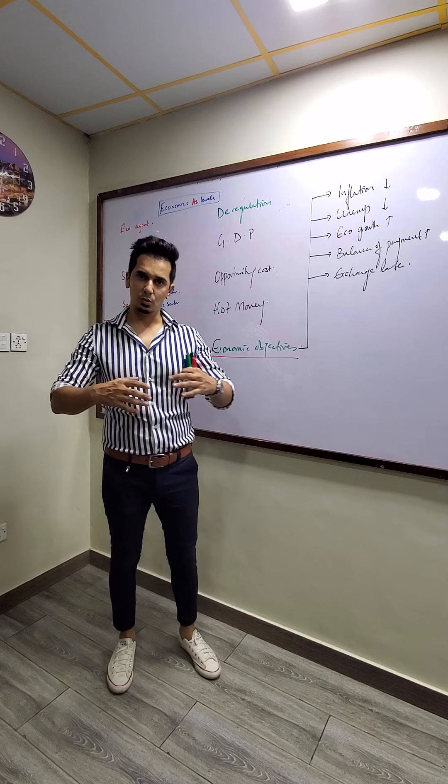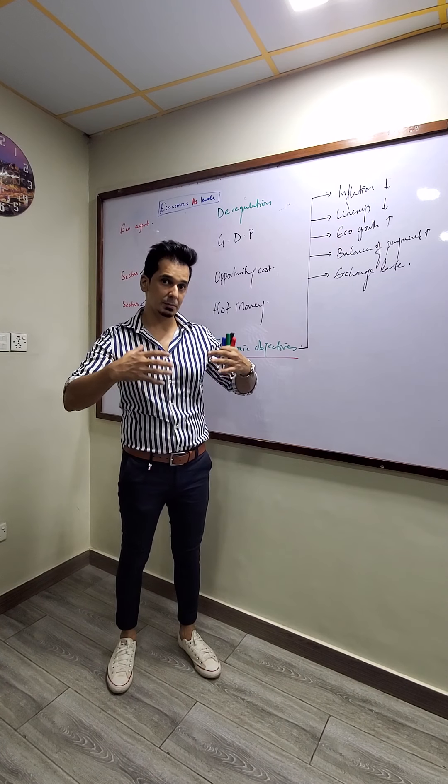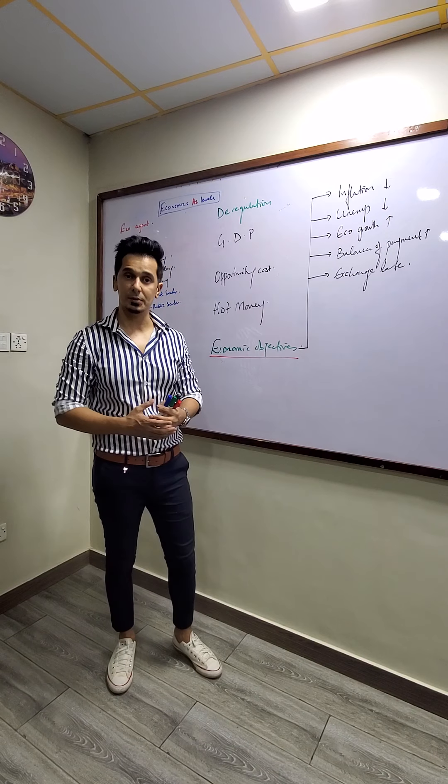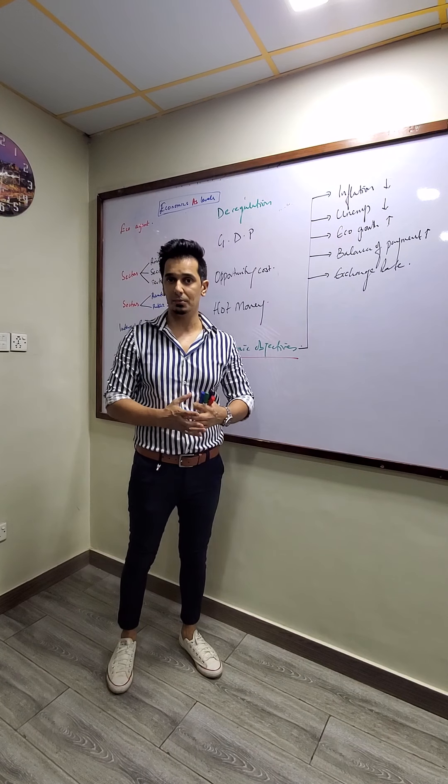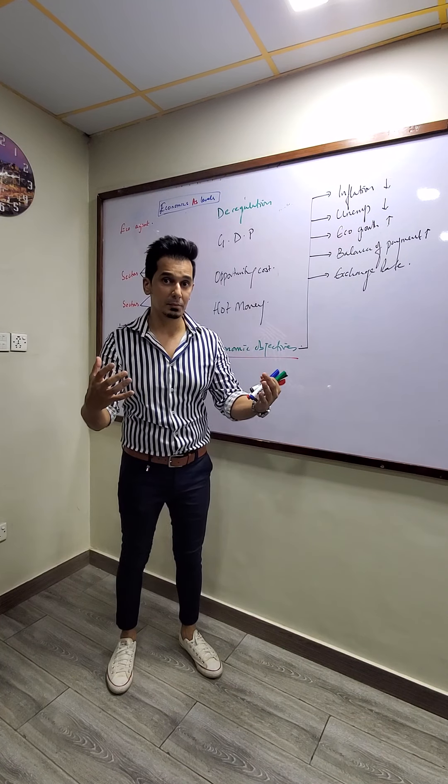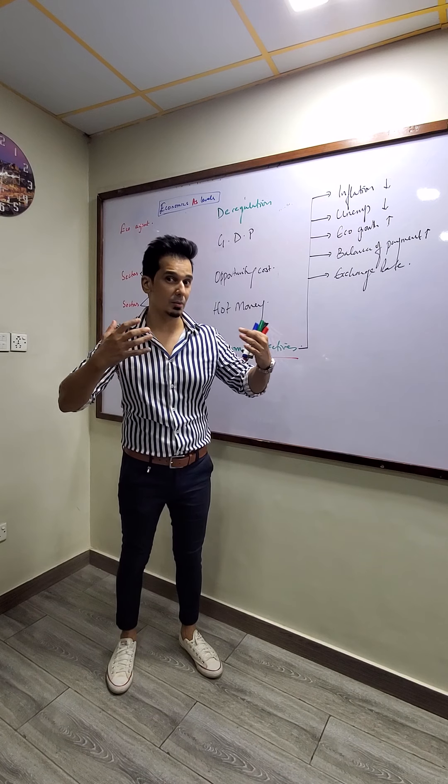What is economic growth? When the country is able to produce more, the GDP increases, that's when economic growth takes place. What happens when there is economic growth? There is more employment. There is more economic activity.